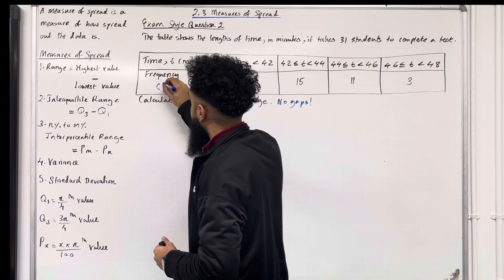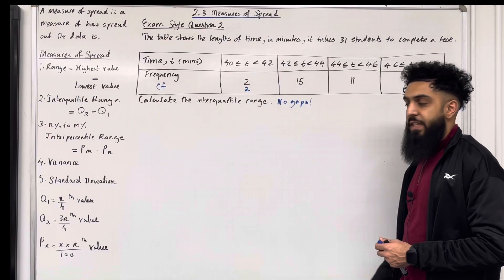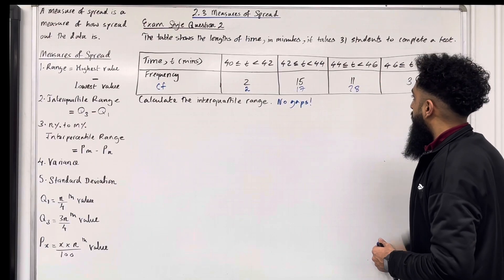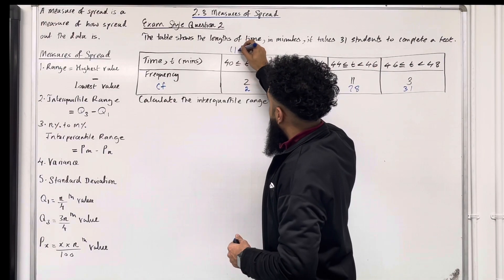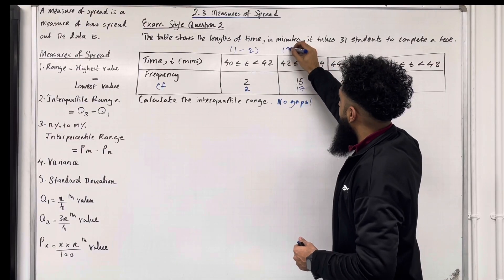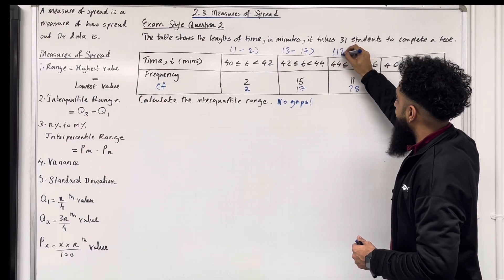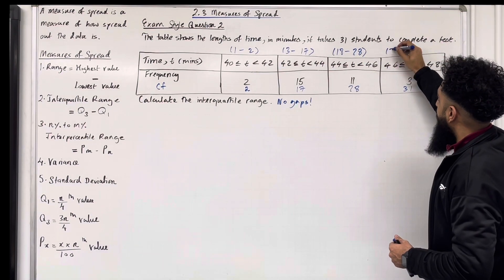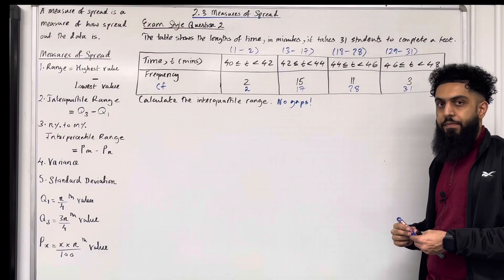Now let's label the cumulative frequency, shorthand CF. The first cumulative frequency is 2. The second is 2 plus 15, which is 17. The third is 17 plus 11, which is 28. And the final is 28 plus 3, which is 31. So the 1st to 2nd data values fall in the first class interval, the 3rd to 17th in the second, the 18th to 28th in the third, and the 29th to 31st in the final class interval.